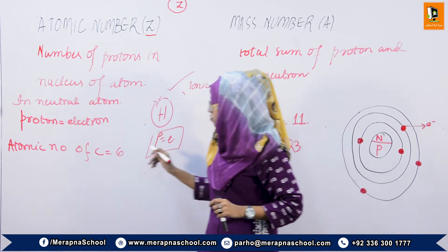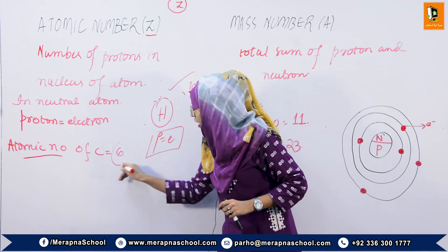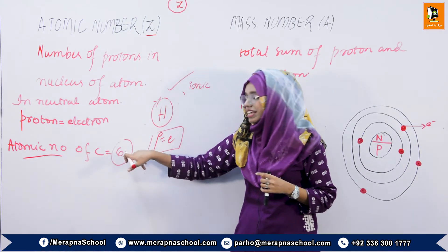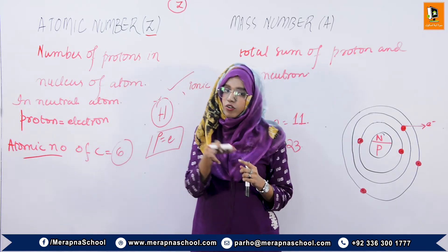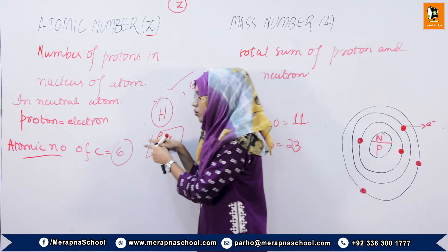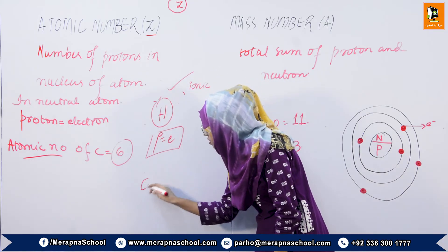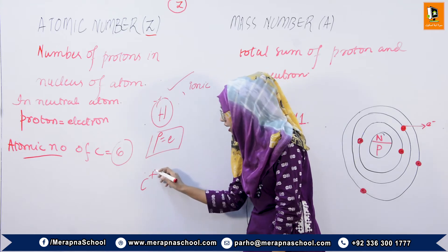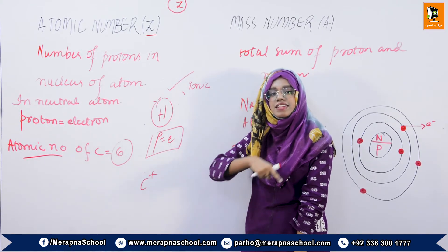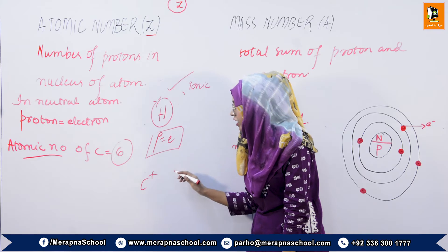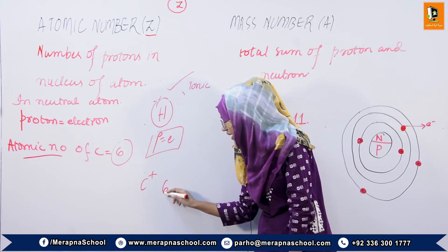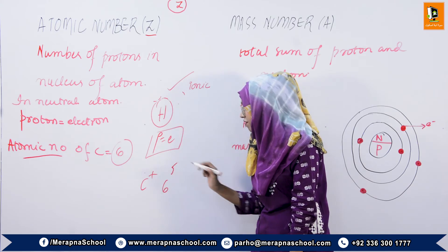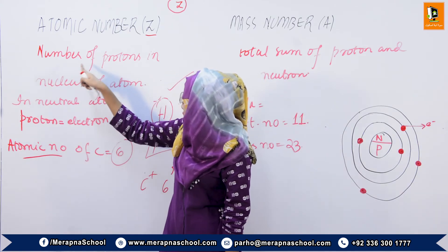So this is the atomic number. For example, carbon's atomic number is 6, meaning the number of protons is 6. In a neutral state, the number of electrons is also 6. But suppose carbon has a positive charge — meaning carbon has given one electron away. After giving that electron, the positive charge shows that this atom has lost one electron, so the number of electrons becomes 5. So we call atomic number the number of protons.